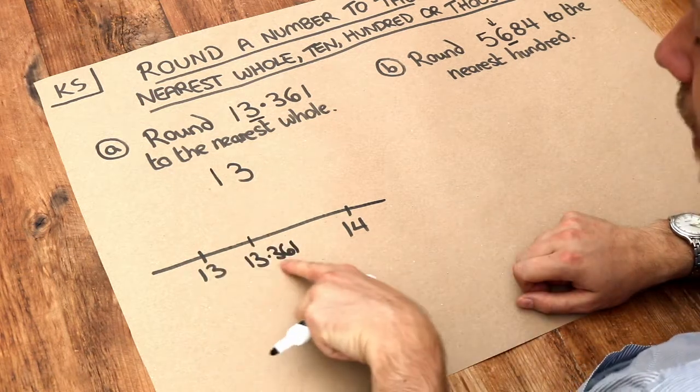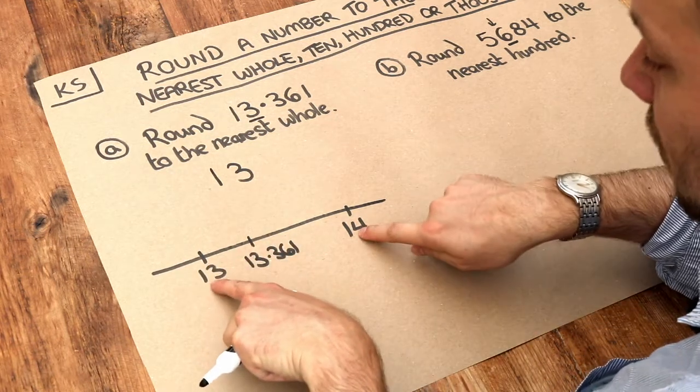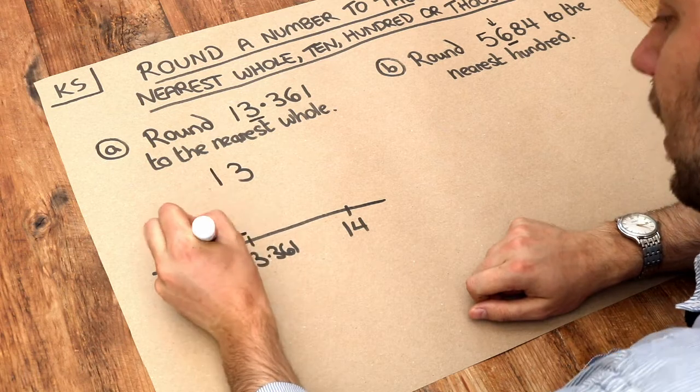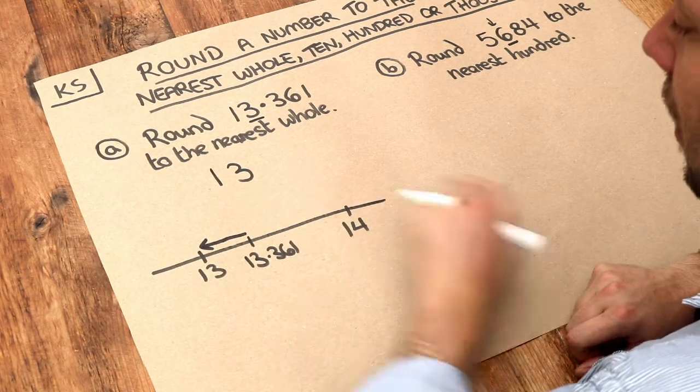So if you want to round this to the nearest whole, well, which of these whole numbers is the nearest? Well, we can clearly see it's that one that's the nearest, so it's going to be 13.